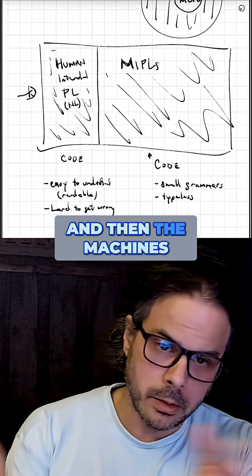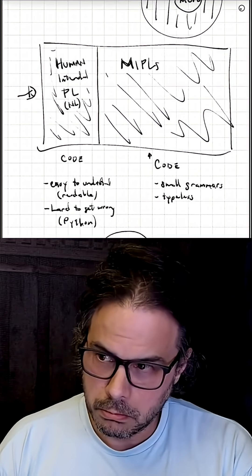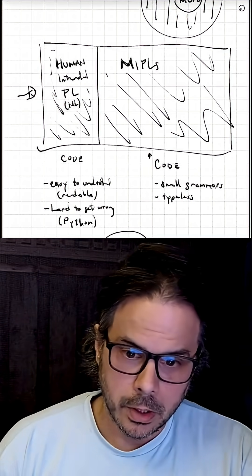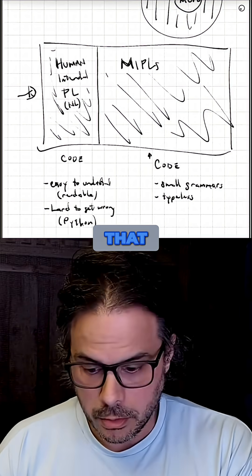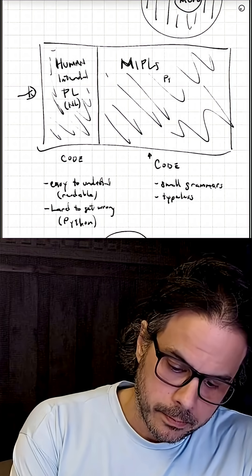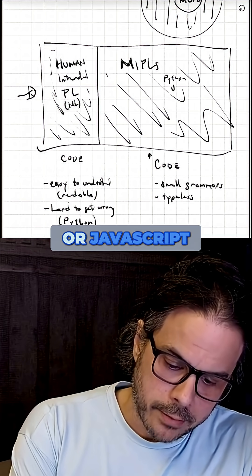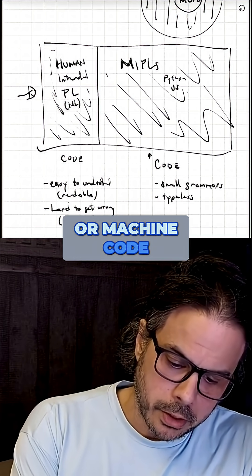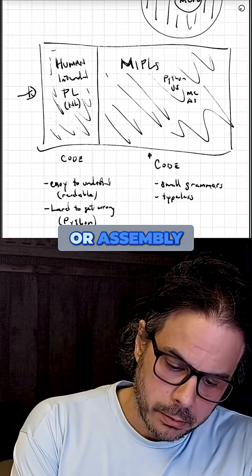Then the machines can do stuff that certain humans can't do, which is write Python code, JavaScript, machine code, or assembly.